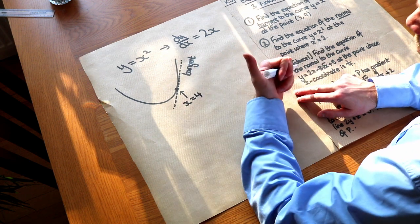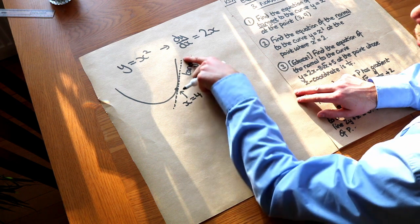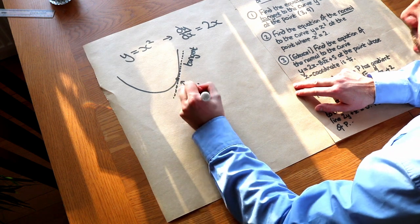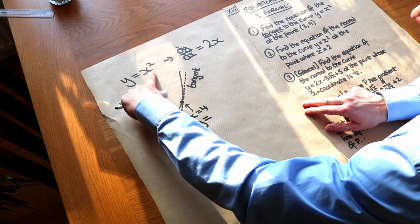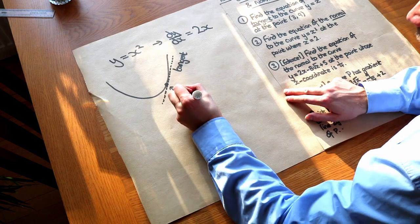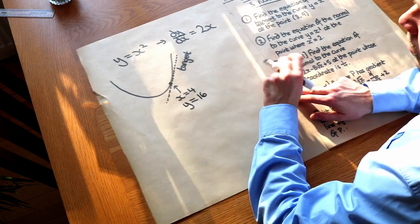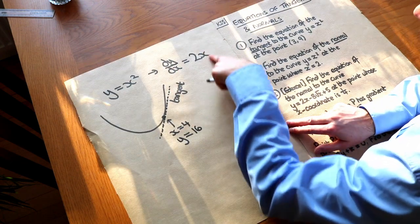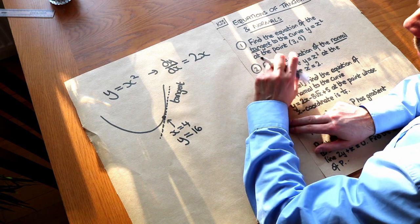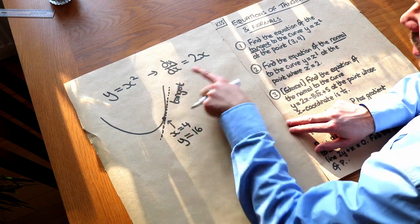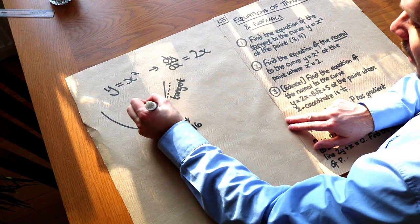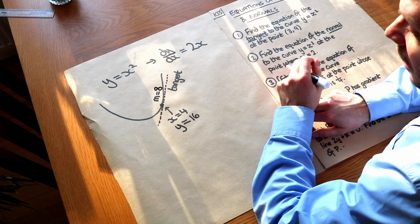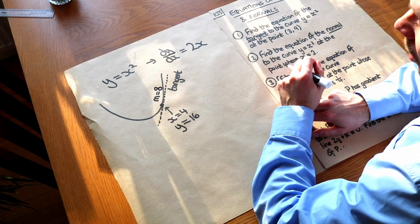We need two things in order to find the equation of a tangent: a point on the line, and the gradient. We know x is 4, and y equals x squared, so y is 4 squared which is 16. We also need the gradient — that's what the gradient function is for. The gradient will be 2 times the x value, so 2 times 4 which is 8. Now we have everything we need.